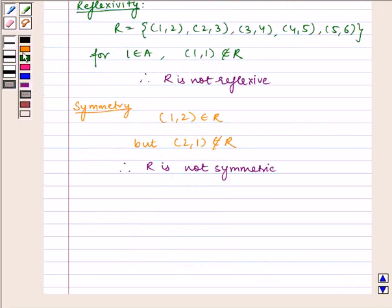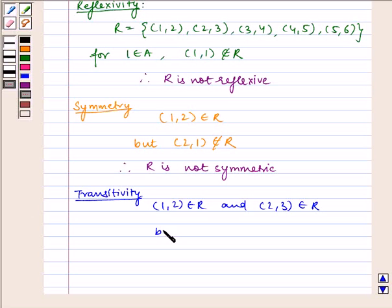Now let us check for transitivity. R is not reflexive, R is not symmetric and R is not transitive. I hope you understood this problem.